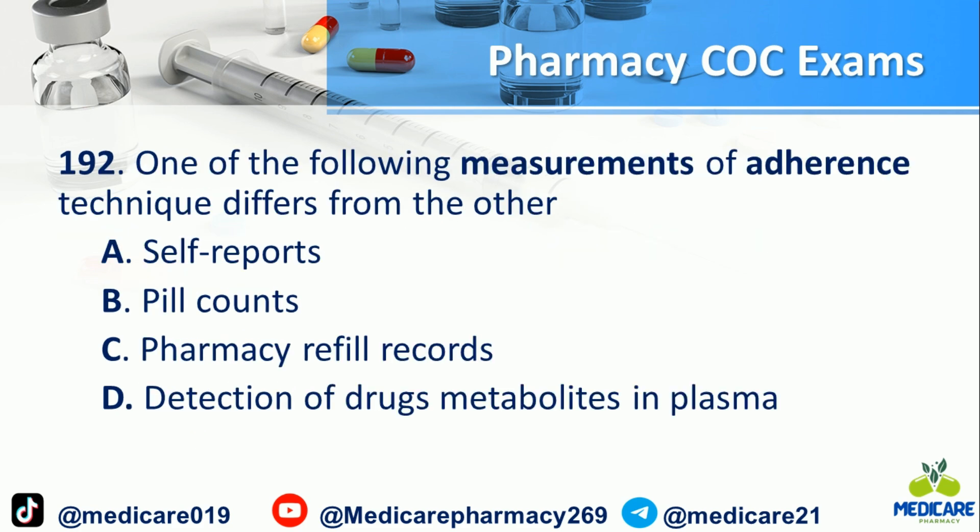Number 192: One of the following measurements of adherence technique differs from the others. A) Self-reports. B) Pill counters. C) Pharmacy refill records. D) Detection of drugs, metabolites in plasma. The answer is D.